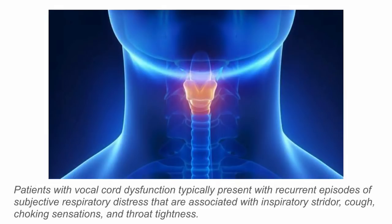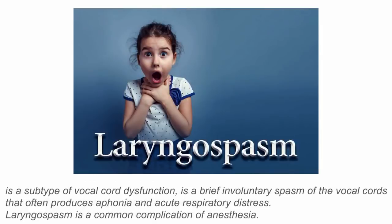Patients with vocal cord dysfunction typically present with recurrent episodes of subjective respiratory distress that are associated with inspiratory stridor, cough, choking sensations, and throat tightness. Laryngospasm is a subtype of vocal cord dysfunction — a brief involuntary spasm of the vocal cords that often produces aphonia and acute respiratory distress.